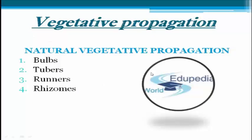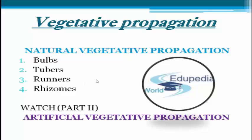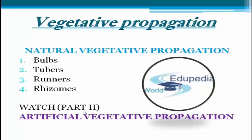After discussing natural vegetative propagation, we now know the four examples or processes for this kind of propagation: bulbs, tubers, runners, and rhizomes. I want you to watch Part 2 of this video and let's talk about artificial vegetative propagation. Thank you for listening — Itopedia out.